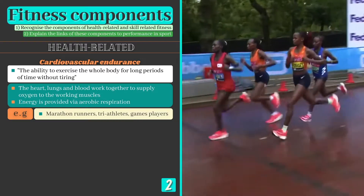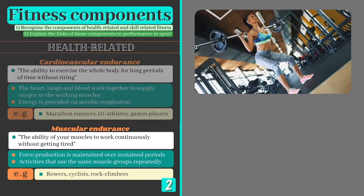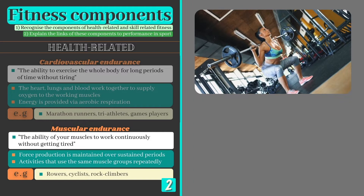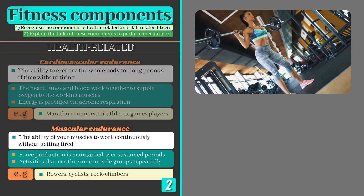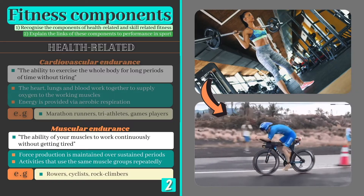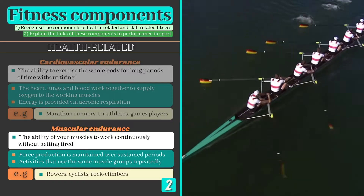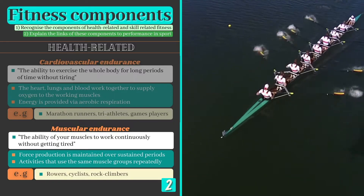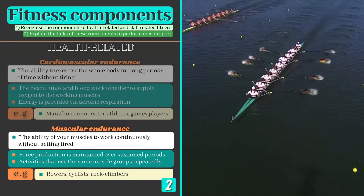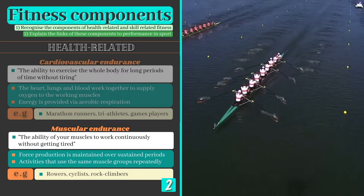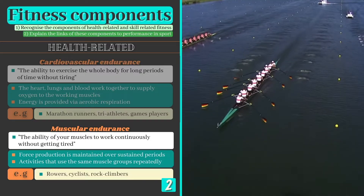Activities that require plenty of stamina include marathon running, triathlons, road cycling and high duration team sports such as football. Muscular endurance is the ability of your muscles to work continuously without getting tired, where force production is maintained over sustained periods of time. Physical activities that rely on muscular endurance include those that use the same muscle groups repeatedly such as rowing, cycling and rock climbing.